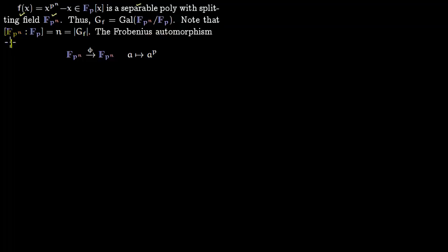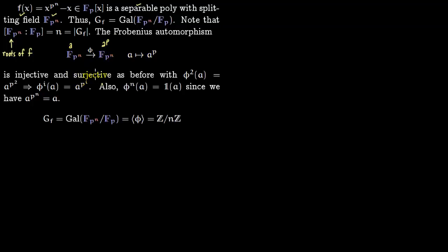Notice that F_(p^n) was generated by roots of the polynomial which we are talking about. We have this Frobenius automorphism which takes a to a^p. This automorphism is injective and surjective.